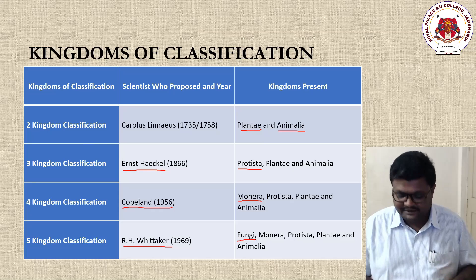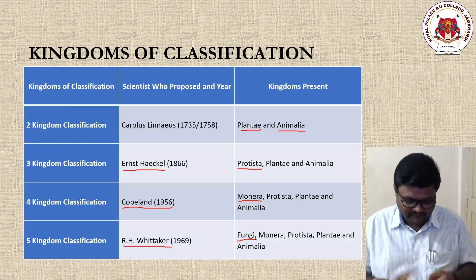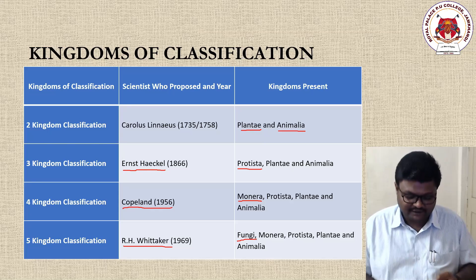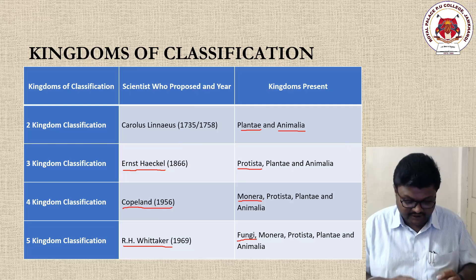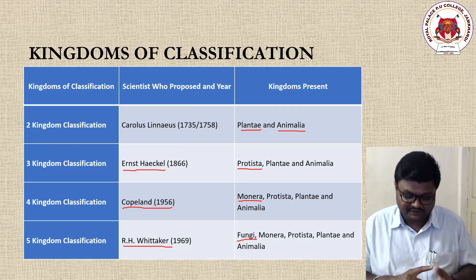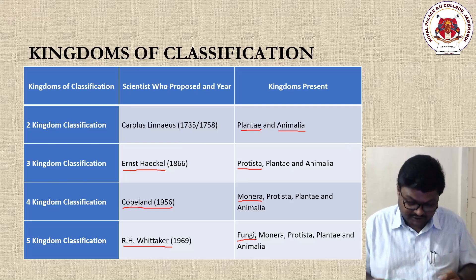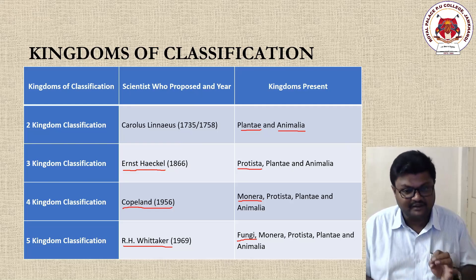To summarize: two kingdom classification — Plantae and Animalia — was created by Carolus Linnaeus. Three kingdom classification — Plantae, Animalia, and Protista — was created by Ernst Haeckel. Four kingdom classification added Monera, introduced by Copeland. The five kingdom classification added Fungi, created by R.H. Whittaker. Two kingdom: Plantae and Animalia. Three kingdom: Plantae, Animalia, Protista. Four kingdom: Plantae, Animalia, Protista, Monera. Five kingdom: Plantae, Animalia, Protista, Monera, and Fungi.